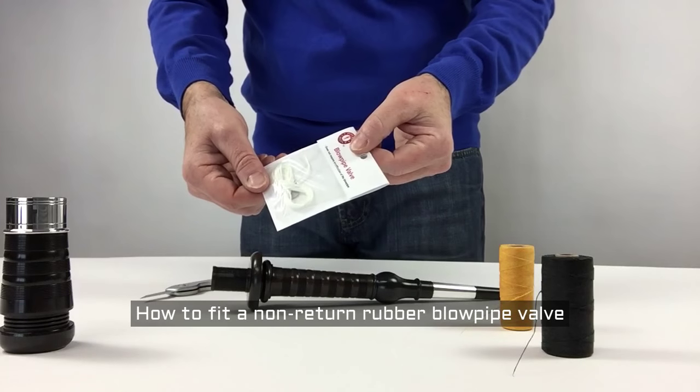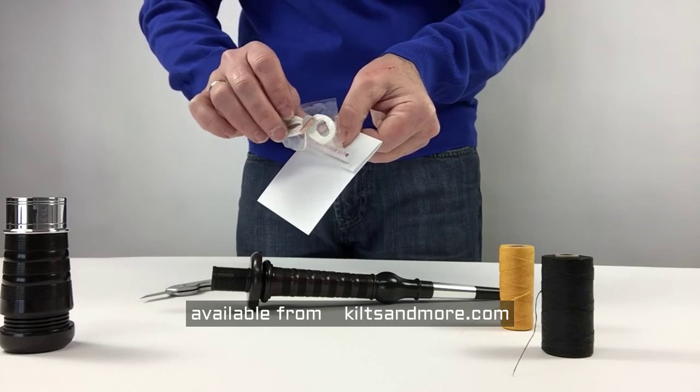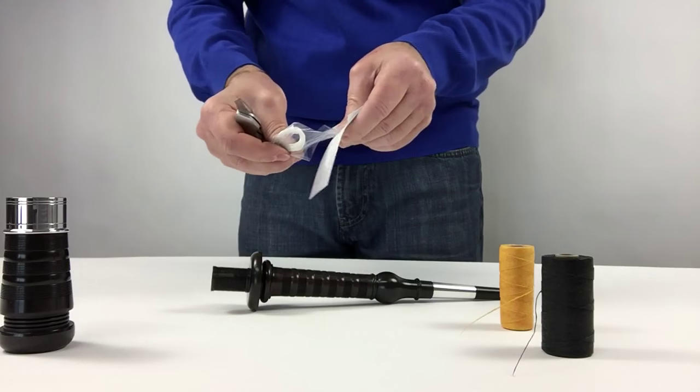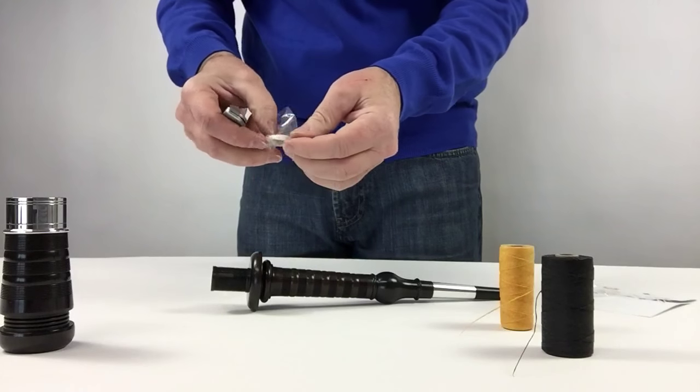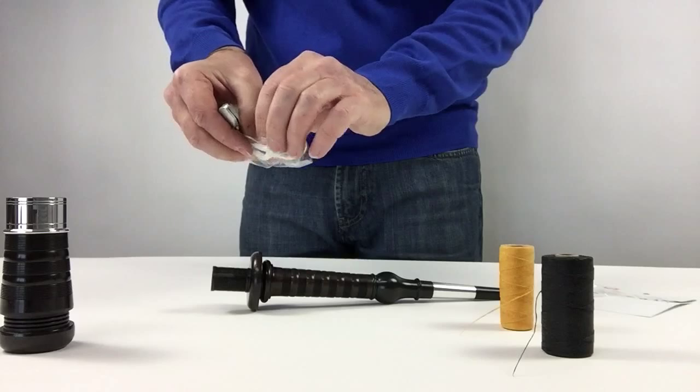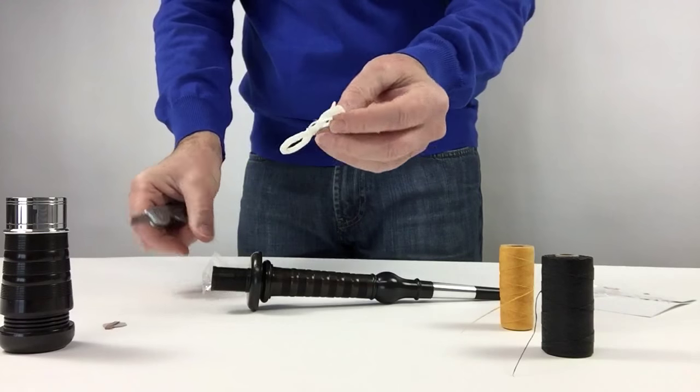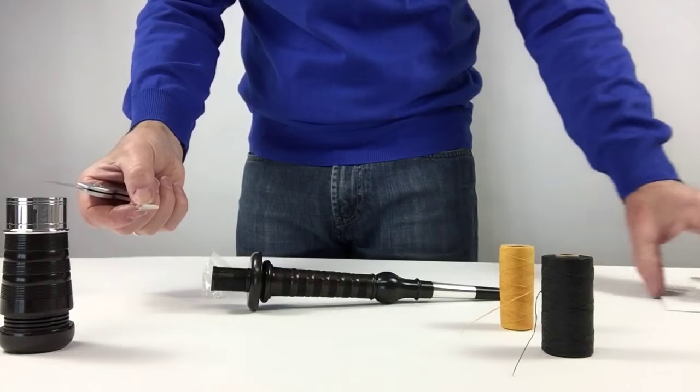I'm going to show you how to install or fit a rubber non-return valve. Just remove it from the packaging here. Just disregard the white tie-in hemp here. That's just an emergency solution. We're going to use hemp.